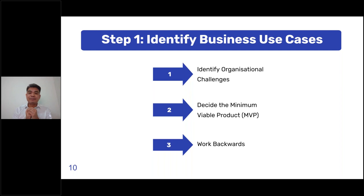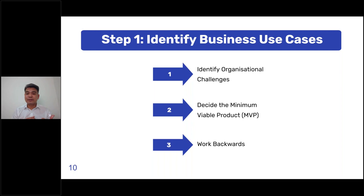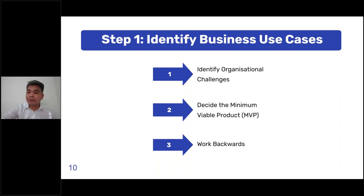Step one: identify the business use cases rather than simply adding another product into the tech stack because it's a shiny object. What is important is to identify the real business use cases by understanding the organization's challenges. Decide the MVP — what is the minimum viable product that you can create to solve this problem? Once you have all of that, you work backward from there.